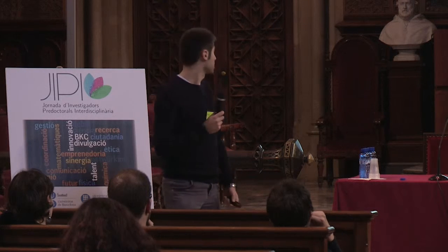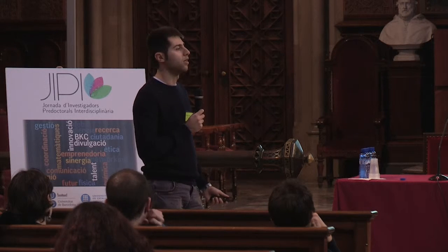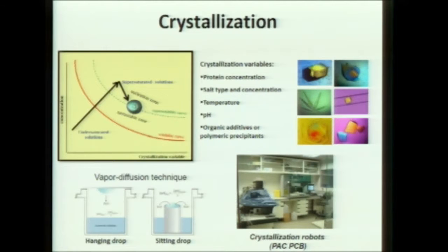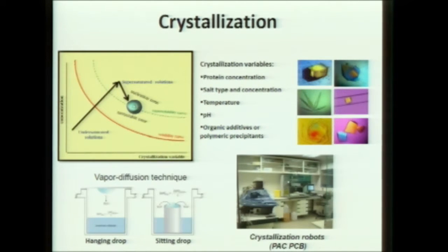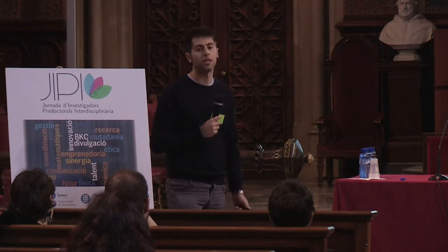What does it mean to crystallize a protein? To do that, you start with a low concentration solution, then you move to the nucleation zone where nuclei are formed, and then the crystals can grow in the metastable zone. As crystallographers, we like playing with the protein concentration, with salts and other organic additives. And in our lab, we use mostly the vapor diffusion technique.